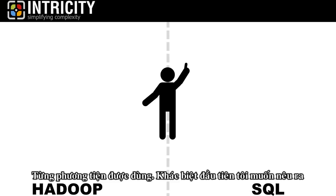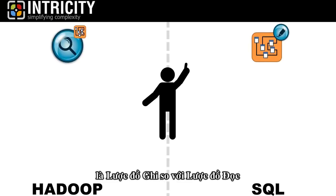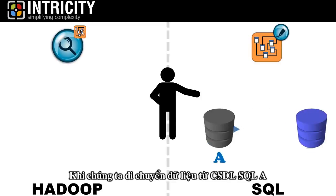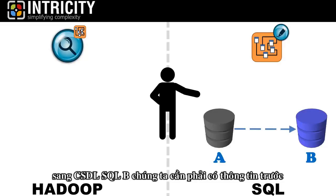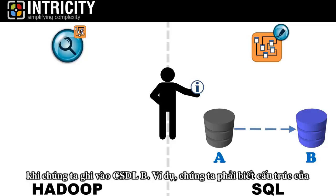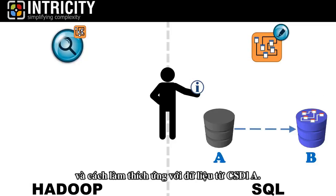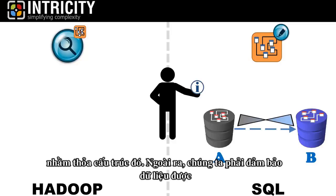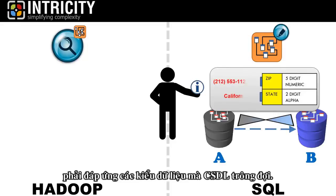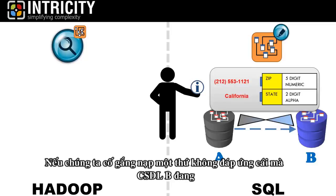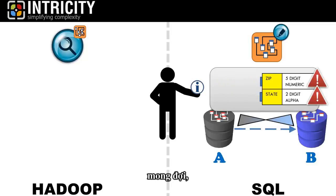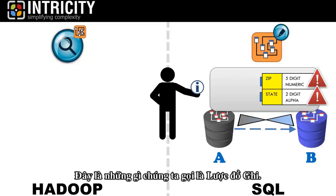The first difference I want to point out is schema on write versus schema on read. When we move data from SQL Database A to SQL Database B, we need to have some information on hand before we write to Database B. For example, we need to know what the structure of Database B is and how to adapt the data from Database A to fit that structure. Additionally, we have to ensure that the data being transferred meets the data types that the database is expecting. If we attempt to load something that does not meet what Database B is expecting, then it will spit out errors and reject the data. This is what we call schema on write.